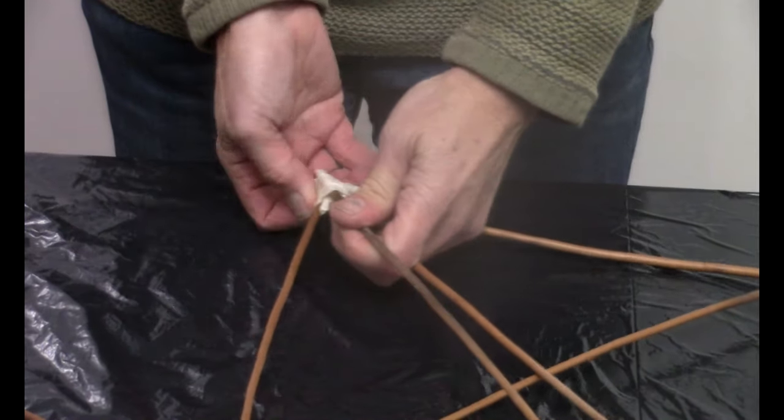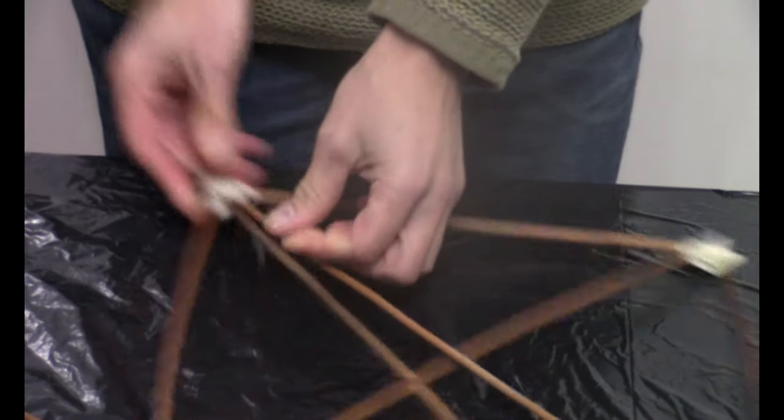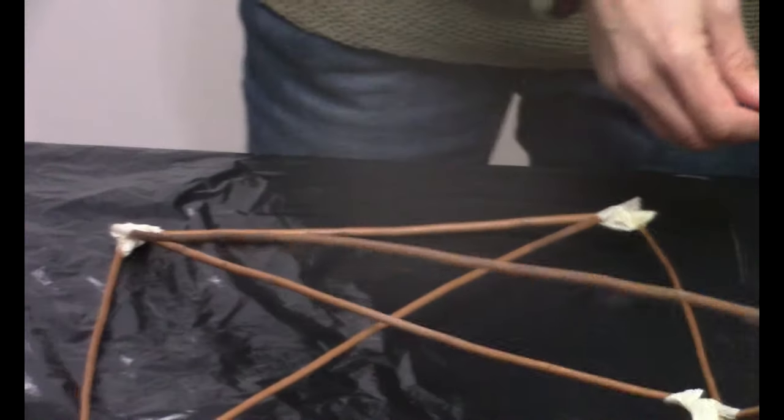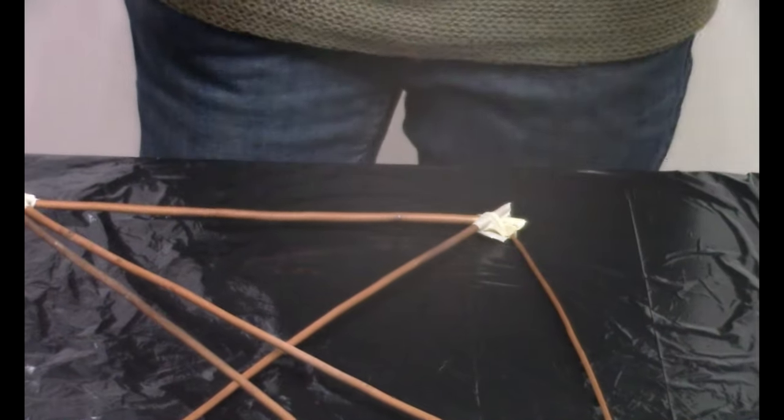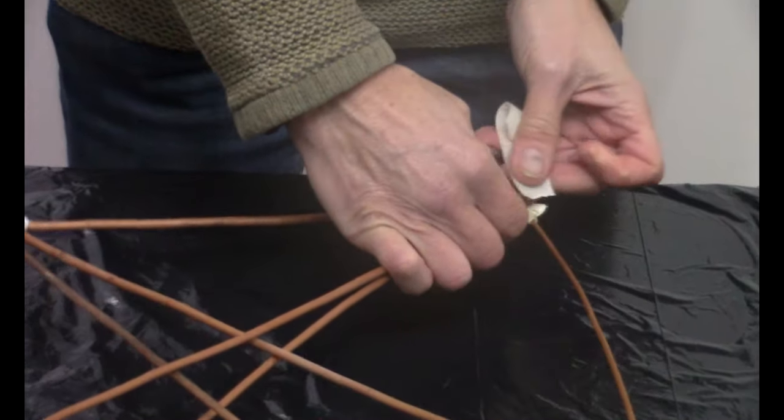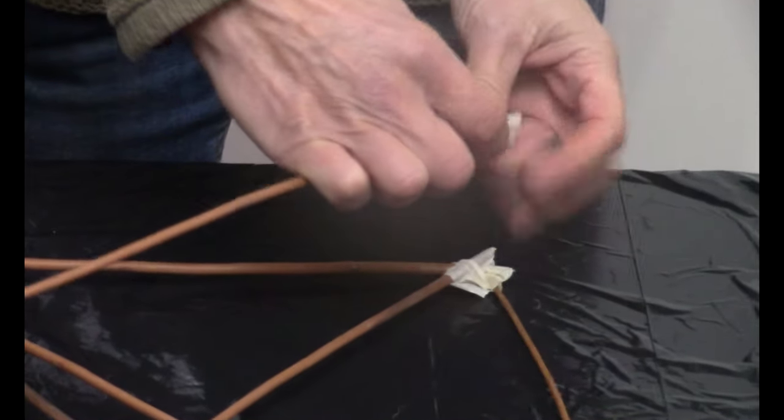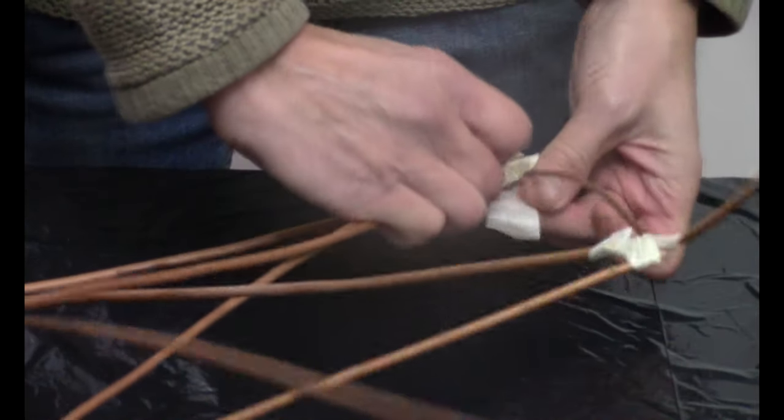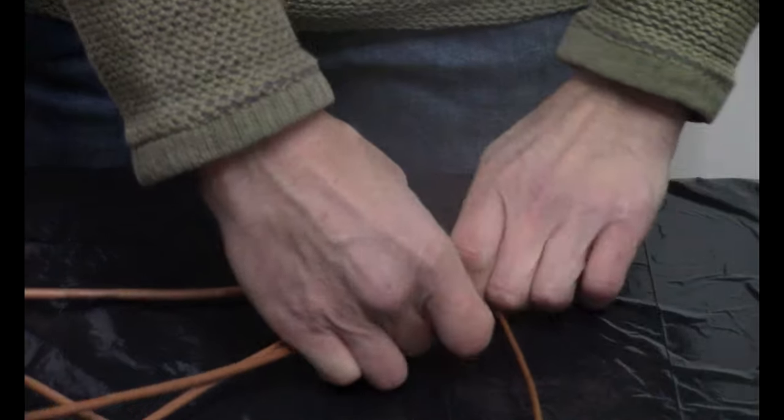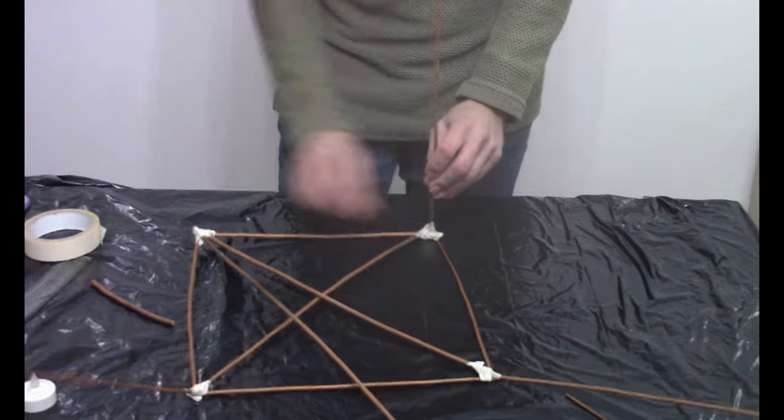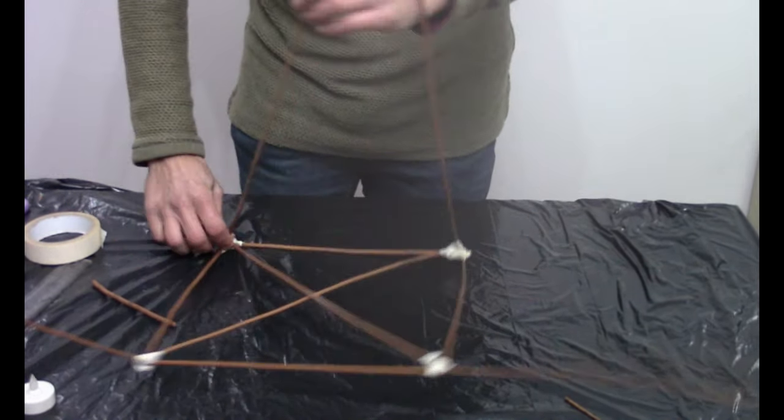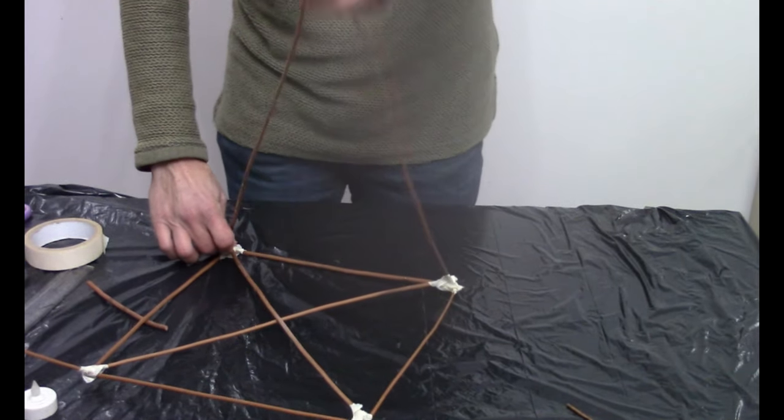Then we're going to tape that to the corner. Doesn't matter if you tape it in the down position because we'll bend it up in a second. Another piece of tape. I find it easier just to wrap it a little bit first.